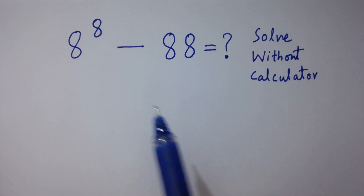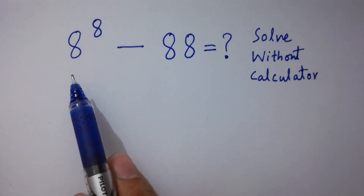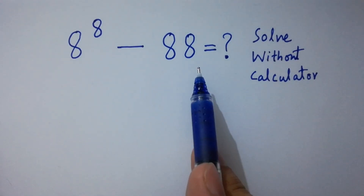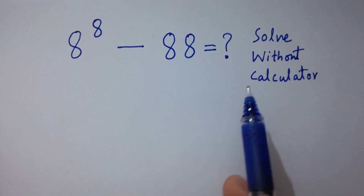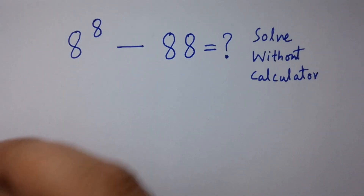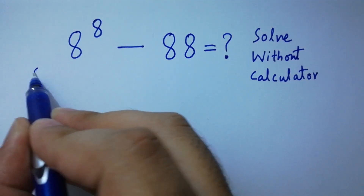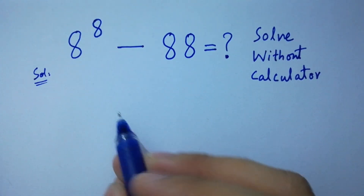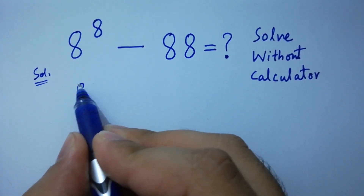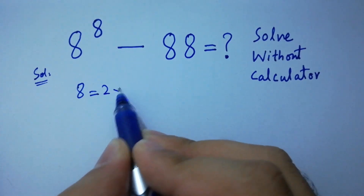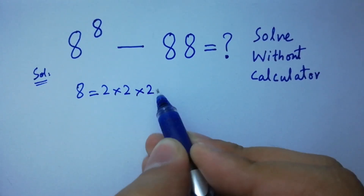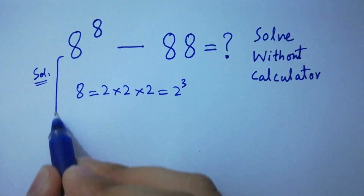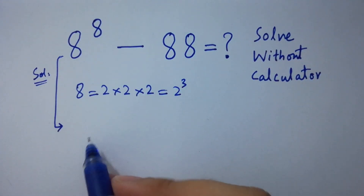Hello friends! 8 to the power 8 minus 88 equals what? Solved without a calculator. Let's have a solution. Since 8 equals 2 times 2 is 4, times 2 is 8, which is equal to 2 cubed.